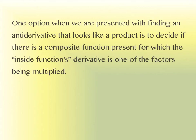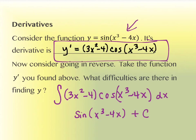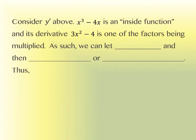Here's the idea of how we do that. When presented with finding an integral that looks like a product, we decide if there is a composite function present for which the inside function's derivative is one of the factors being multiplied. Back here, the integral looks like a product, and the inside function — the thing inside of cosine — has a derivative out here that is the other piece. The x cubed minus 4x is the inside function, and its derivative, 3x squared minus 4, is one of the factors being multiplied.